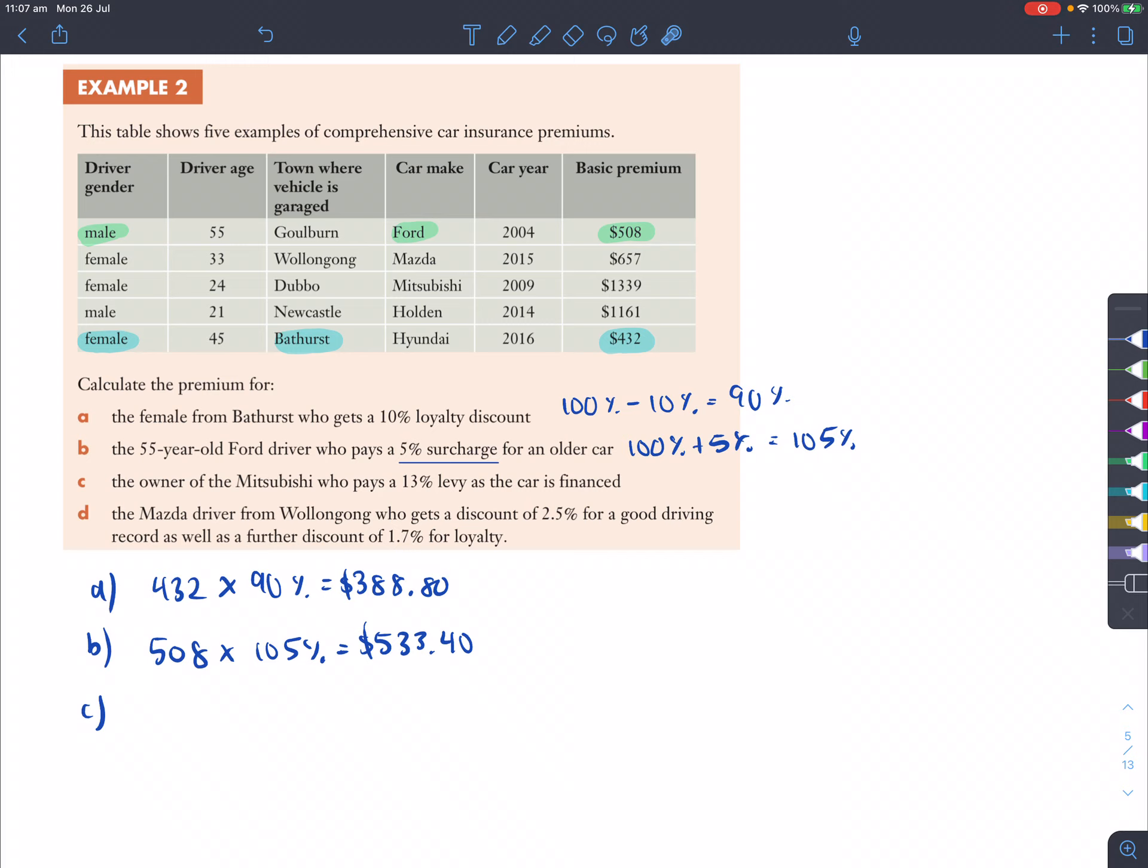Question C, the owner of a Mitsubishi vehicle who pays 30% levy as the car is financed. So finance meaning that they haven't paid it off, they're still paying a monthly account, they're in debt still. So that 30% levy there is for the Mitsubishi owner, that's there, and this person pays $1,039. So we'll get that amount there, write it down, but because you're paying a 30% levy, you're adding that on top of the 100% that you pay, which is $1,039. So I'm multiplying that by 130% to add 30% on top of it, and that will now get us $1,513.07. And that's quite expensive.